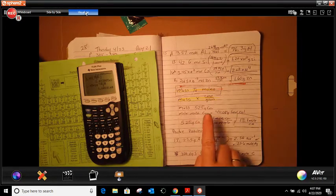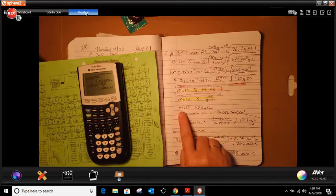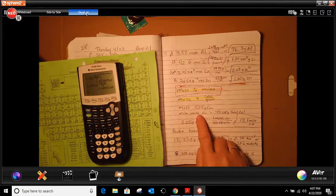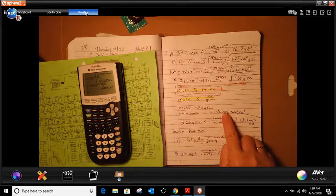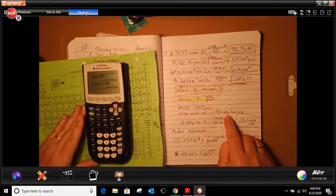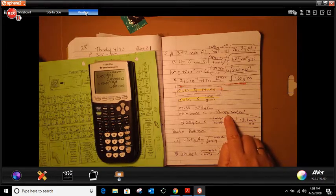So in the question, it told us that we have a mass of 525 grams of CA. Our molar mass of CA is 40.08 grams. So it's already given us this, we don't even have to look at the periodic table. We just have to do the formula.